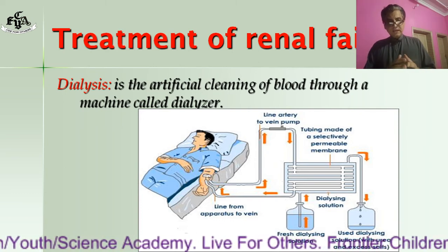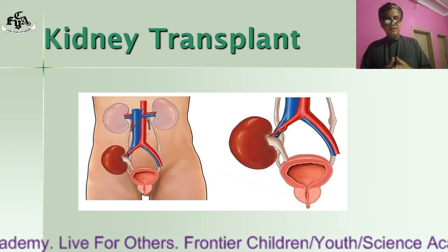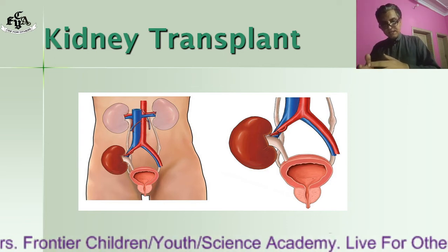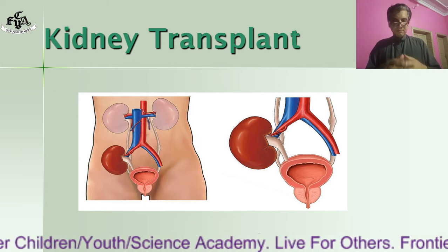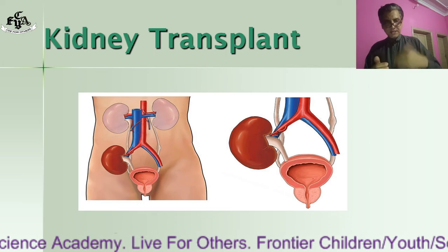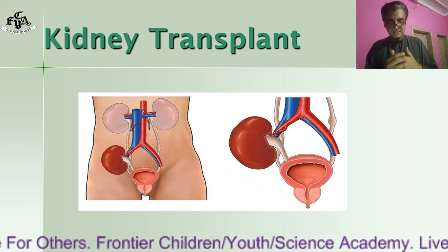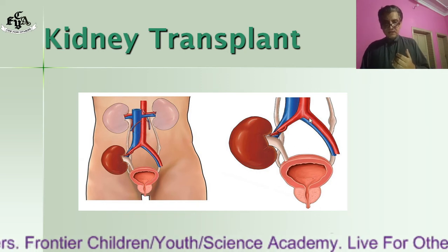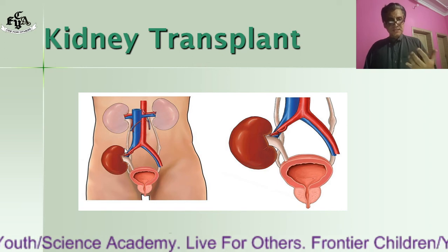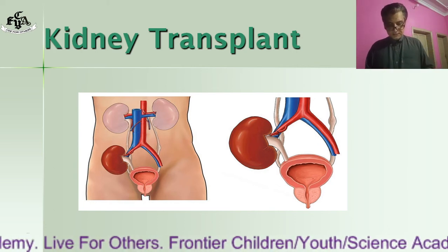If the kidney is totally failed and dialysis is not working, the last option is kidney transplant. In a kidney transplant, a healthy kidney is taken from a healthy person and grafted into the patient. It is necessary that the donor who donates the kidney is a blood relative; otherwise there will be tissue rejection and the grafting will not succeed. The grafted kidney is placed below the original kidney. This is kidney transplant, and this is the end of unit number one.